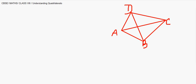In quadrilateral ABCD there are four angles. This angle is referred to as angle A, that is DAB. This angle is denoted as angle B, that is ABC. Then BCD is denoted as angle C, and CDA is denoted as angle D.